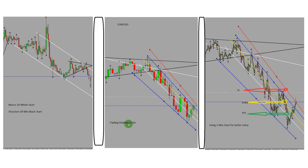As you can see, there is a downtrend channel on the five-minute trading chart. Whenever the price goes up and touches the top of the channel, it goes down; it goes up, touches it, goes down — up, touches, and goes down again. That pattern creates a good opportunity for a trade.